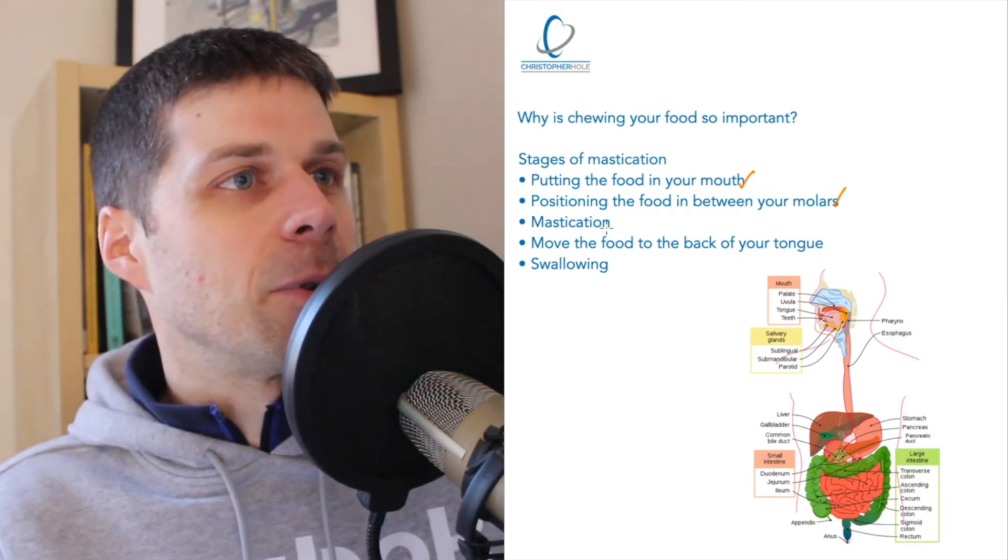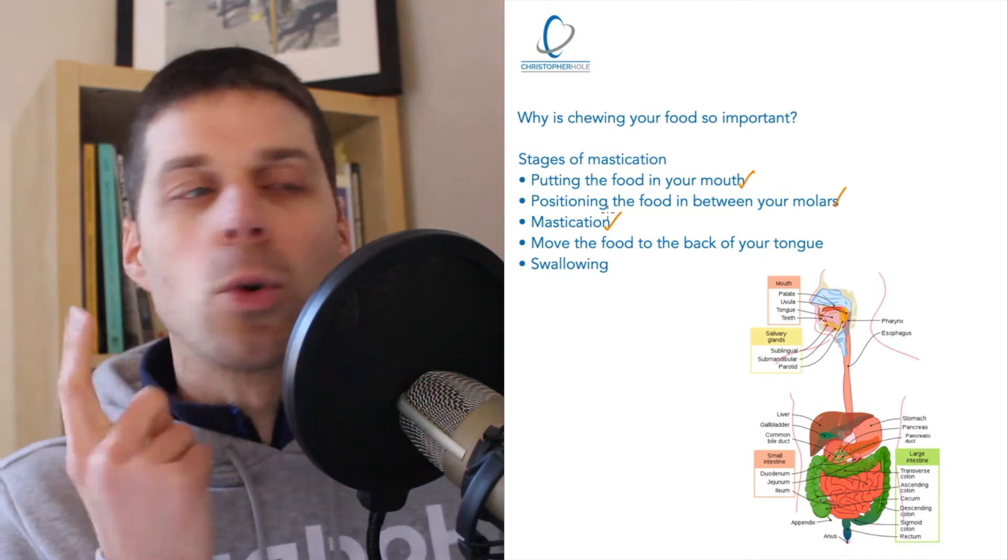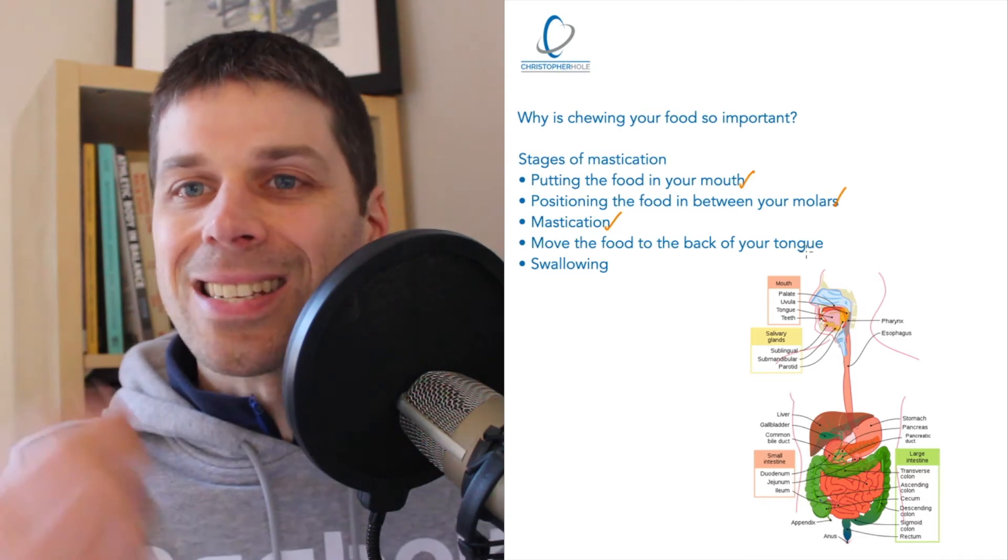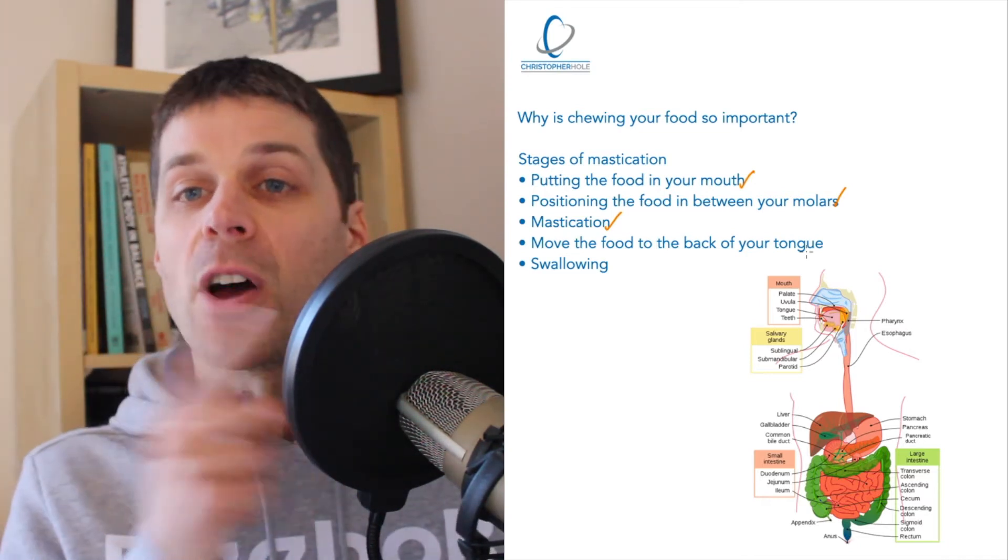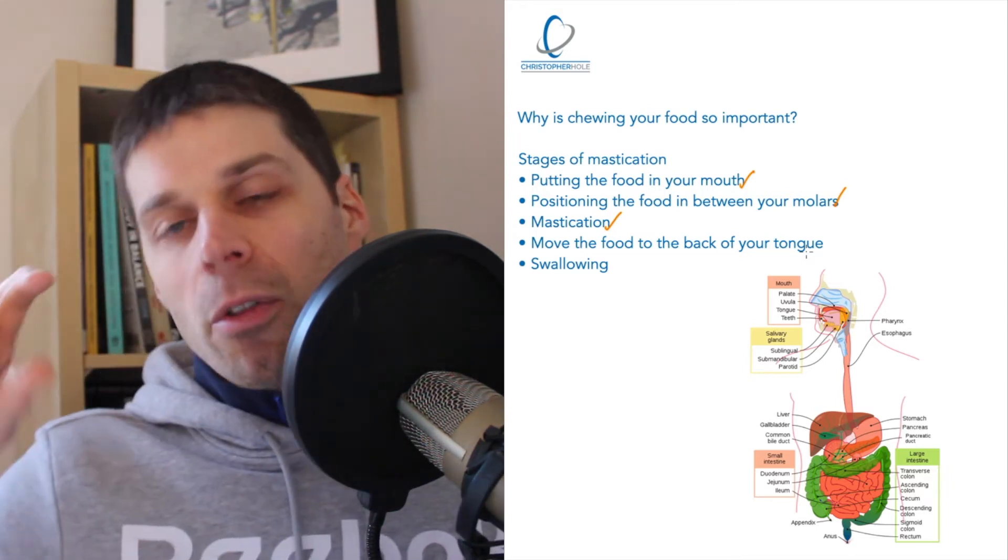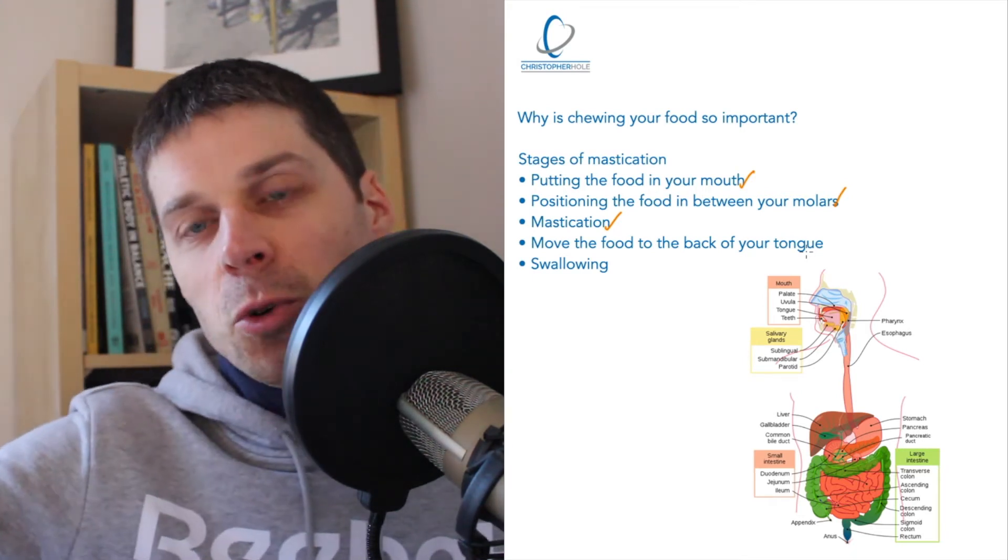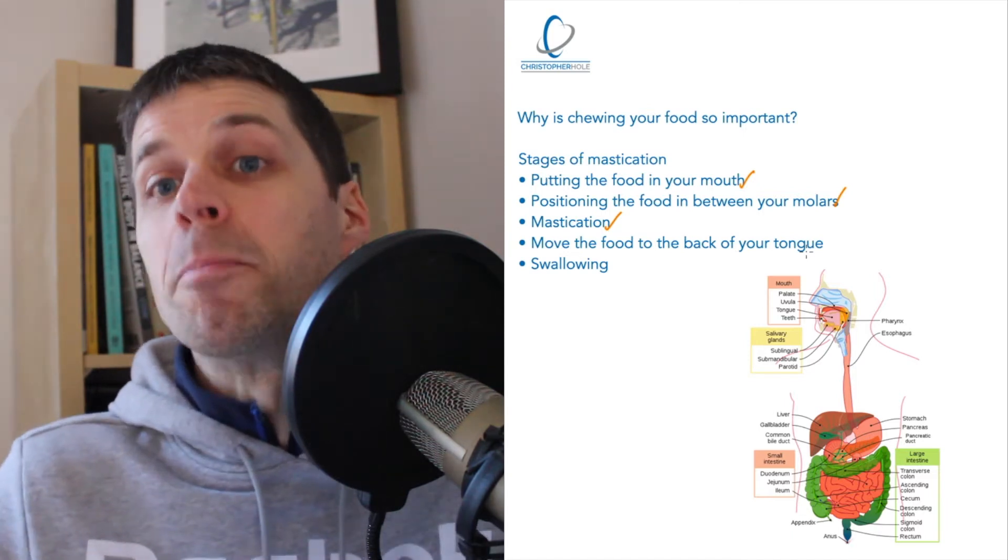Then what starts to happen is we start to chew the food. So we'll start to chew the food, and what we'll then start to do is move the food to the back of your tongue. As it starts to break down, we'll not only move it to the back of the tongue, we'll move it around the mouth, between different teeth. What the tongue will start to do is start to roll and fold the food.